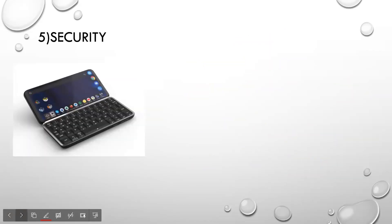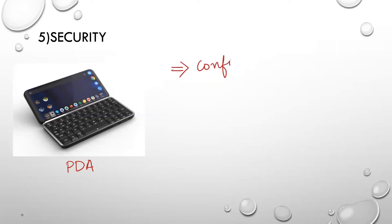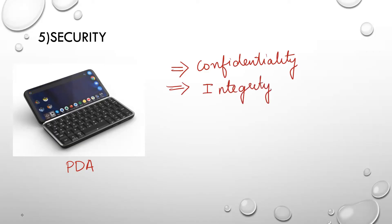Now we are going to the next step, which is security. Security is an important aspect in embedded systems nowadays. Let us take a PDA — personal digital assistant — to explain security. There are three terms in security: the first one is confidentiality, the second one is integrity, and the last one is availability.